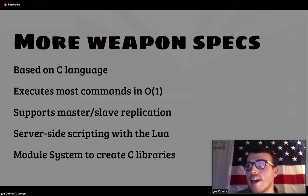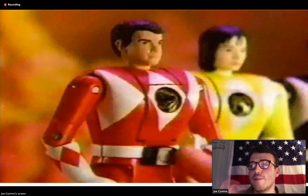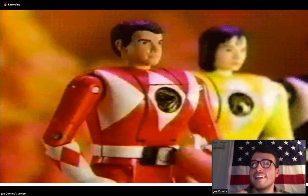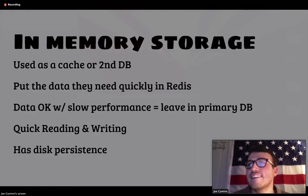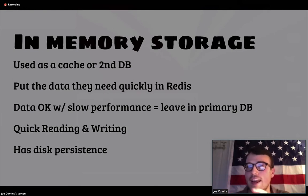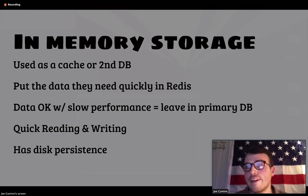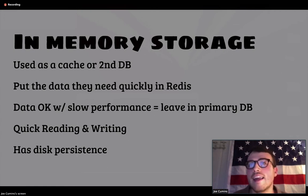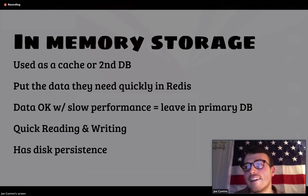A new thing recently added to Redis is a module system for creating C libraries. For most people, they use Redis as a cache or a second database. That means they put the data they need quickly in Redis, and the data that's okay with slower performance lives in a primary database. Redis has quick reading and writing, and it has disk persistence, so you can automatically log your data to a disk, and if you crash, it'll save it.